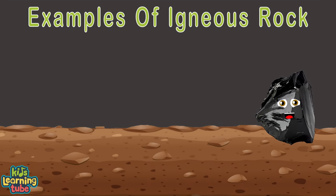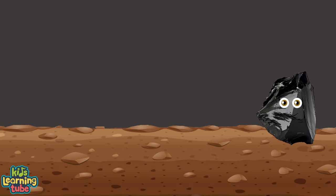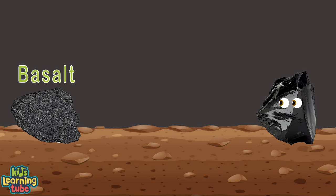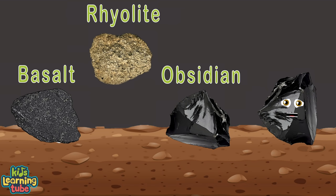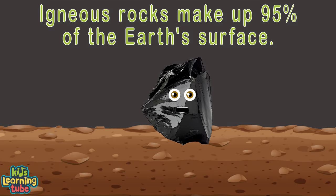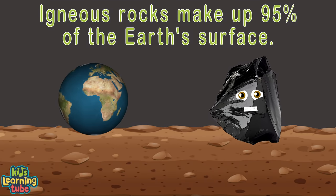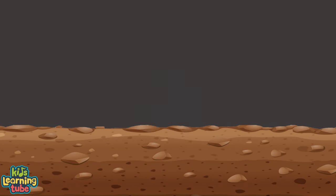Here are some examples of igneous rock: basalt, rhyolite, and obsidian. Igneous rock makes up 95% of the Earth's surface.